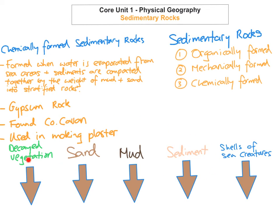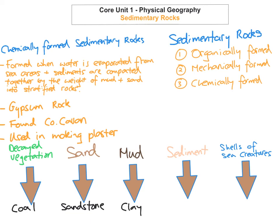A helpful diagram to keep in mind: when decayed vegetation is compressed, compacted, and cemented through lithification, it turns into coal. When sand fragments are compacted and cemented together, they form sandstone. When mud is compressed, compacted, and cemented, it forms clay. When sediments are compacted, compressed, and cemented, they form rock. And when shells of sea creatures are cemented, compressed, and compacted, they form limestone.